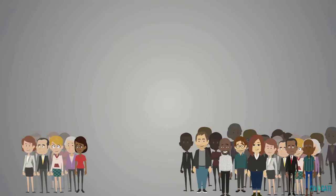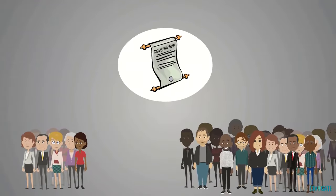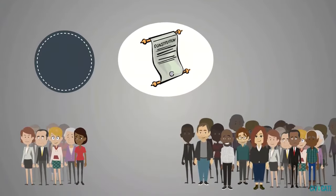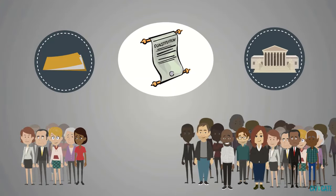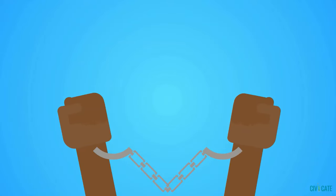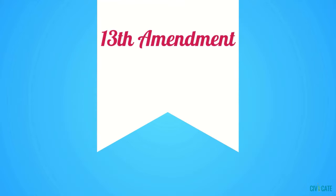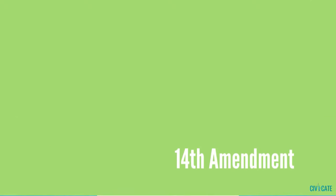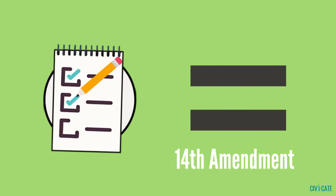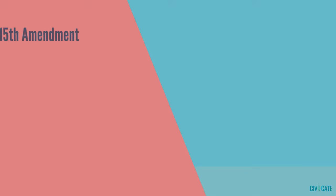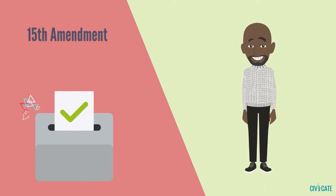But if the majority is oppressing a minority, the federal government has needed to correct the situation with amendments to the Constitution, laws, policies, and Supreme Court decisions. Civil rights first received attention in the 19th century, with the passage of the 13th Amendment that abolished slavery, the 14th Amendment that gave citizenship, due process, and equal protection under the law to everyone in the U.S., and the 15th Amendment that gave all men the right to vote.